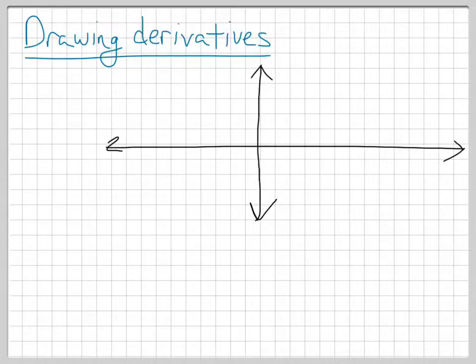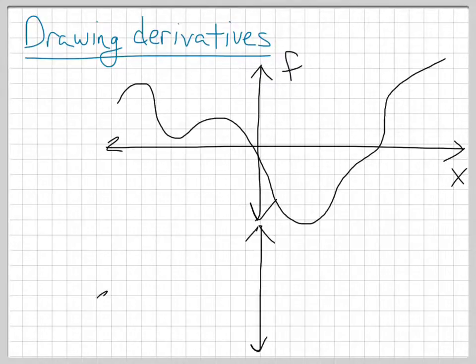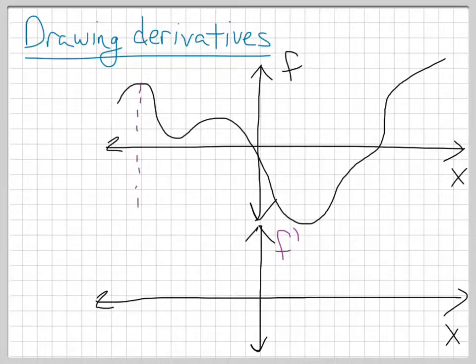If you want to get into how to draw derivatives, we talked about this a little bit. If you, let's say, have some generic function that does something like that, and you want to draw the graph of the derivative f prime right below it. The first thing you do would be to, wherever there's a horizontal tangent line, that means the derivative has to go to zero, so put little zeros there.